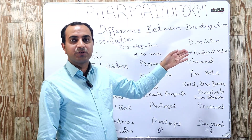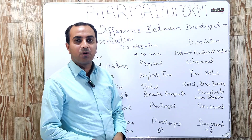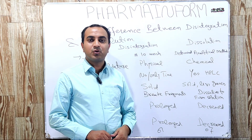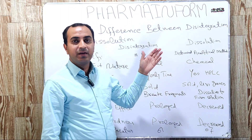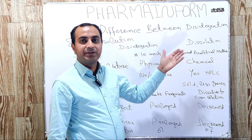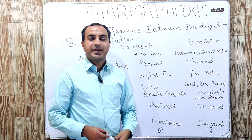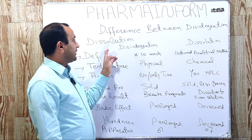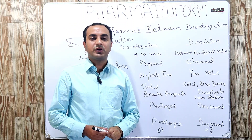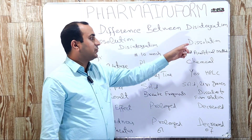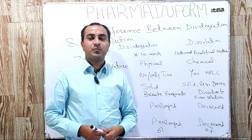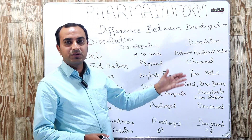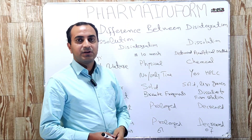What is dissolution? Dissolution is a process in which the dosage form dissolves to form a solution and the amount of drug is determined by using an analytical technique like the HPLC method. So in disintegration, our dosage form only breaks down into small fragments, whereas in dissolution, our dosage form is completely dissolved to form a solution and the drug is released.